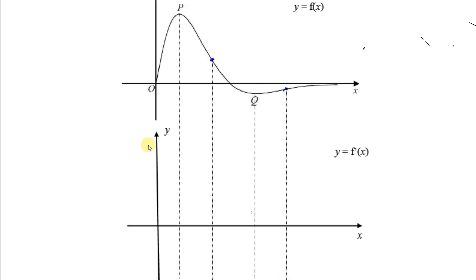Those are the points you've got to look for when drawing your gradient function. Think very clearly — here the gradient is positive, so between zero and p, the gradient function has to be above the x-axis. The gradient at p is zero, so the gradient function is going to touch the x-axis at the point where p is. Between p and q, the gradient function has to be below the x-axis because it's a negative gradient. The graph is falling — whenever the graph is falling, the gradient function is going to be below the x-axis. Whenever the graph is rising, the gradient function is going to be above the x-axis.